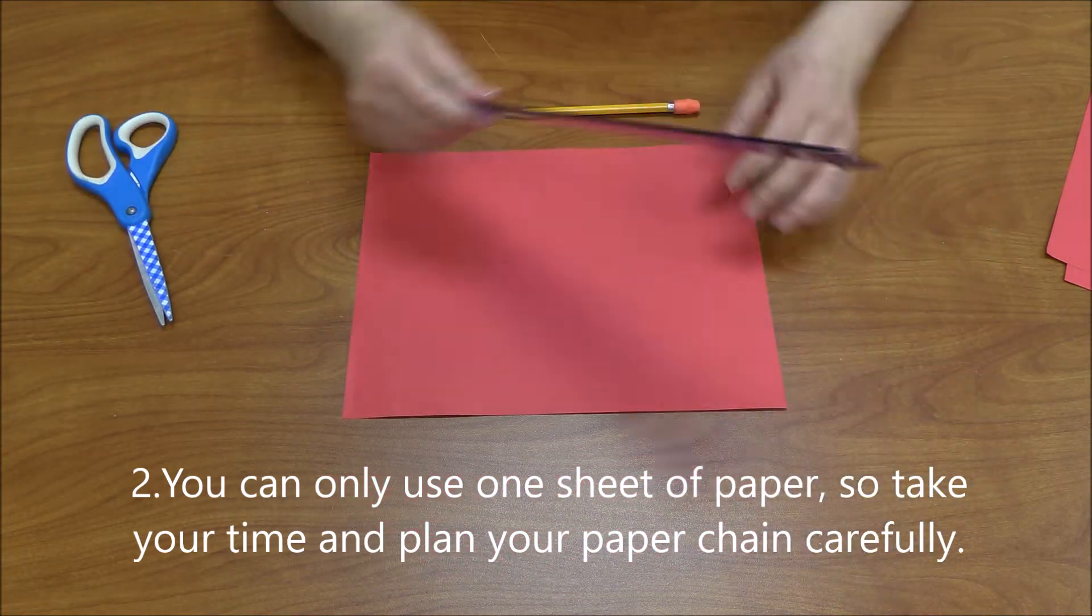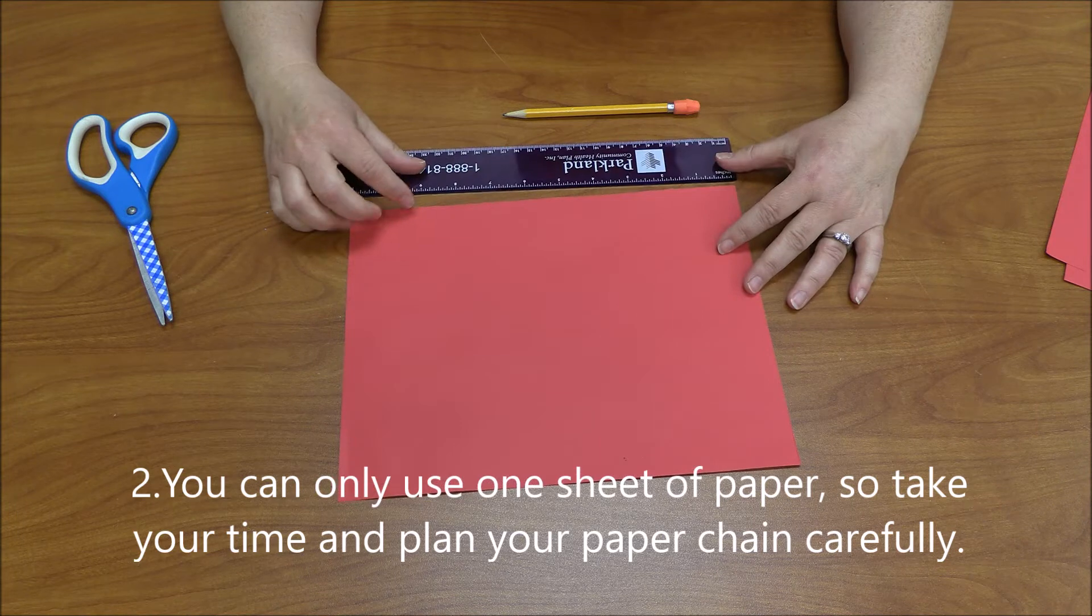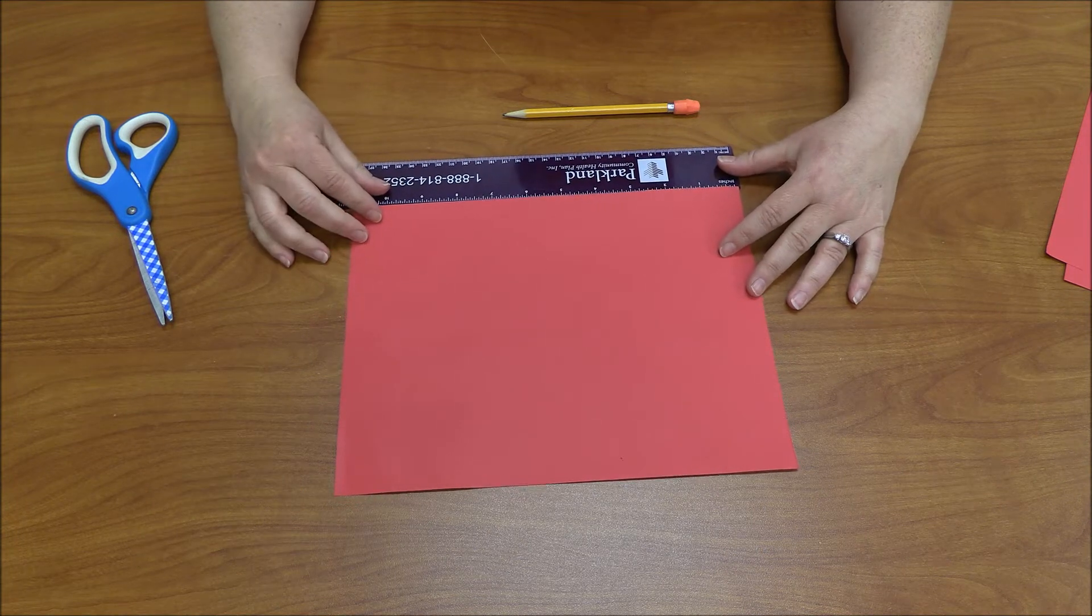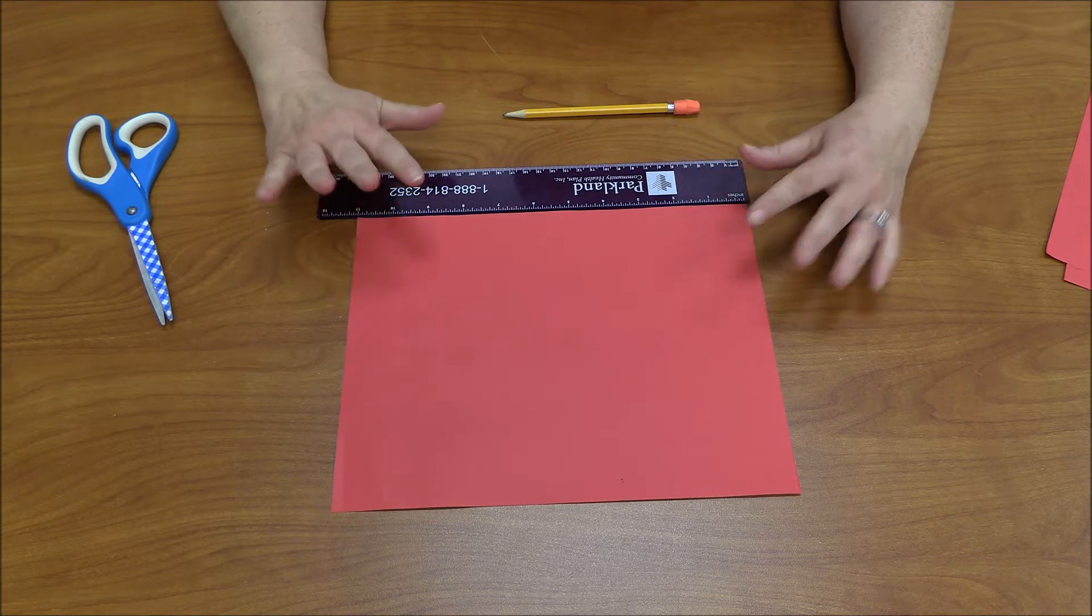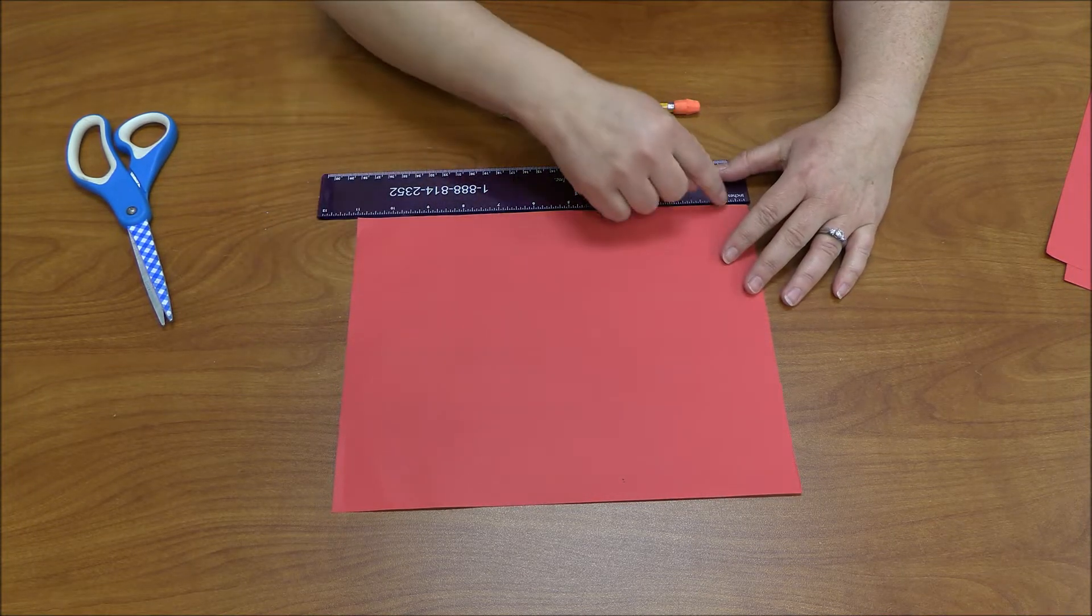Then you also have to decide how long you want your strips to be. I chose a certain measurement, but I'm not going to tell you because I want you to figure this out on your own. I made my marks on the ruler and then cut out my strips. Now I'll show you.